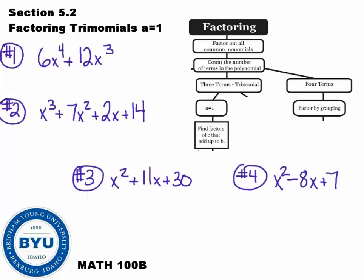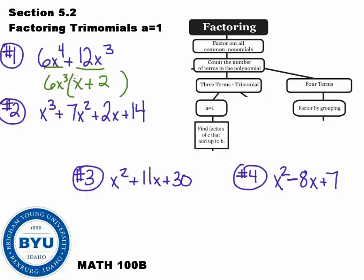Here are four problems. This first one has two terms. The first thing I'm going to do is factor out all the common stuff. Looks like the common factor would be 6 and x cubed, so we're pulling out 6x cubed. When we pull that out of the first term, we're left with x, and out of the second term, we're left with 2. The answer is 6x cubed times x plus 2.